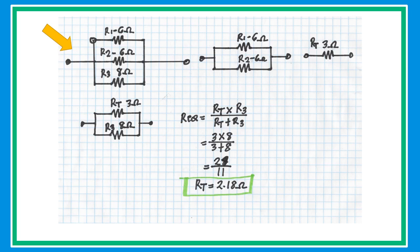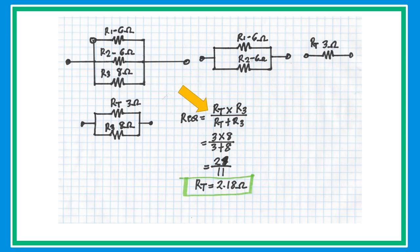Since R1 and R2 have the same value of 6 ohms, just get half the value. Draw the circuit, and for two resistors in parallel use the product-over-sum formula: (R1 × R2) / (R1 + R2). Substituting the values gives an equivalent resistance of 2.18 ohms.